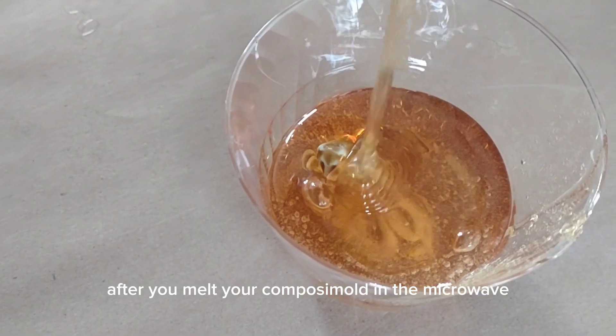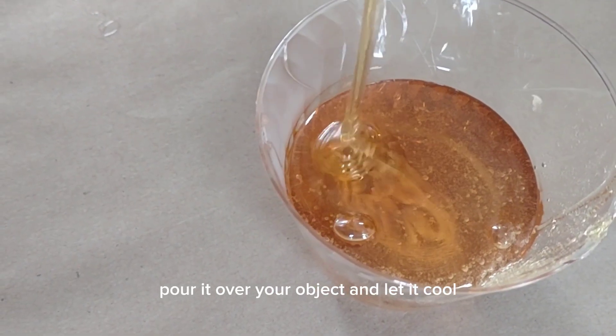After you melt your composite mold in the microwave, pour it over your object and let it cool, and you have your mold.